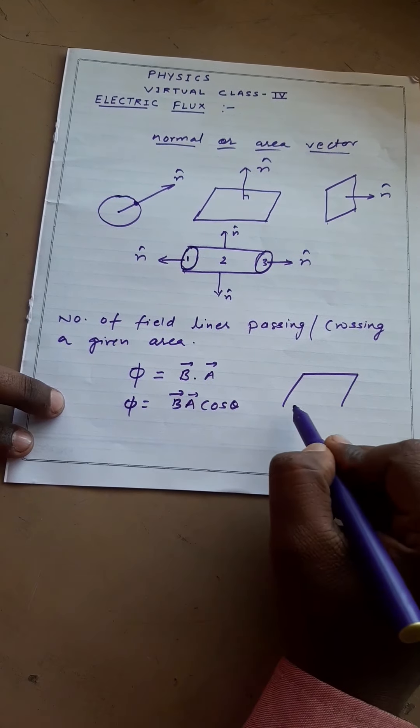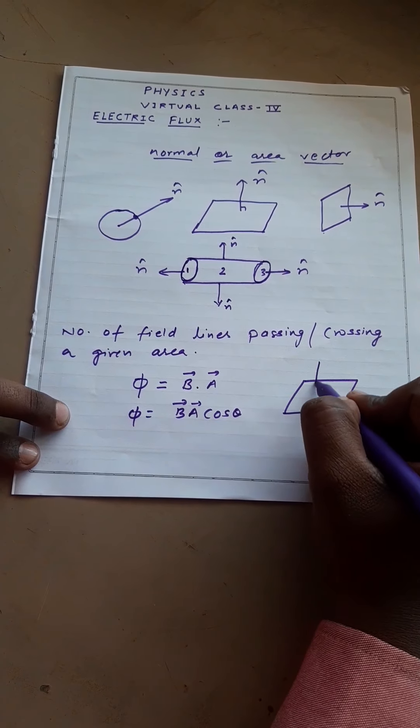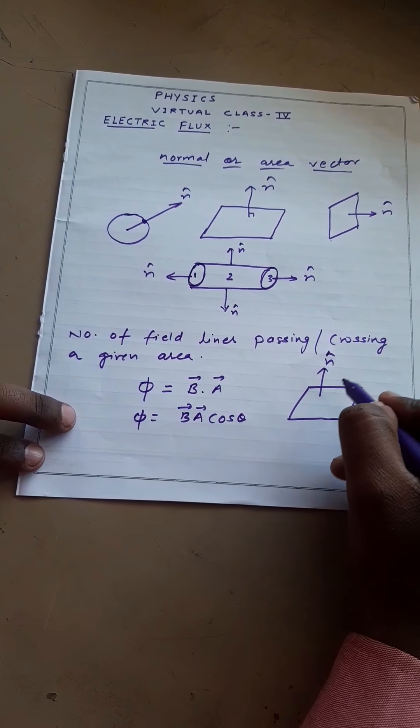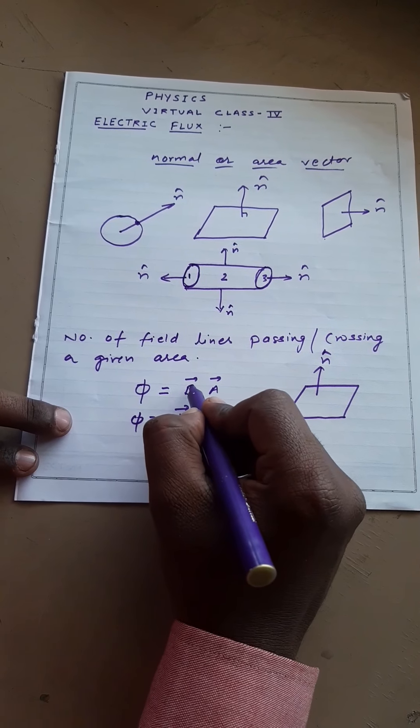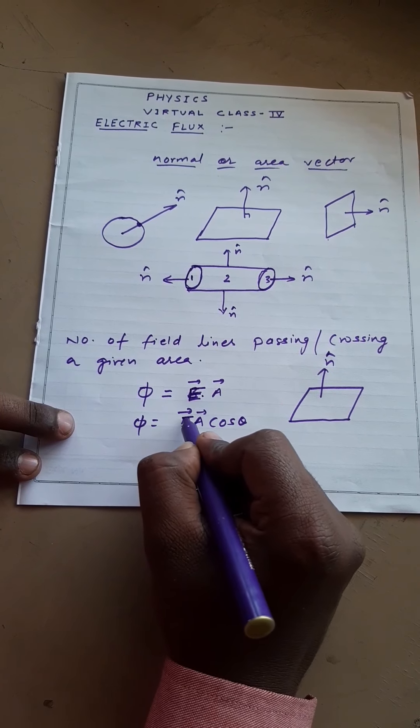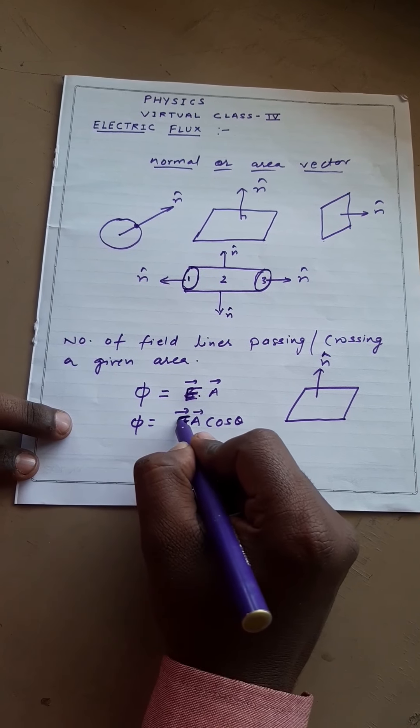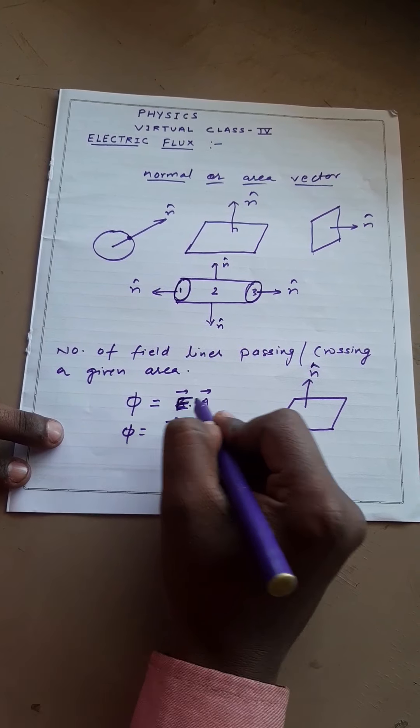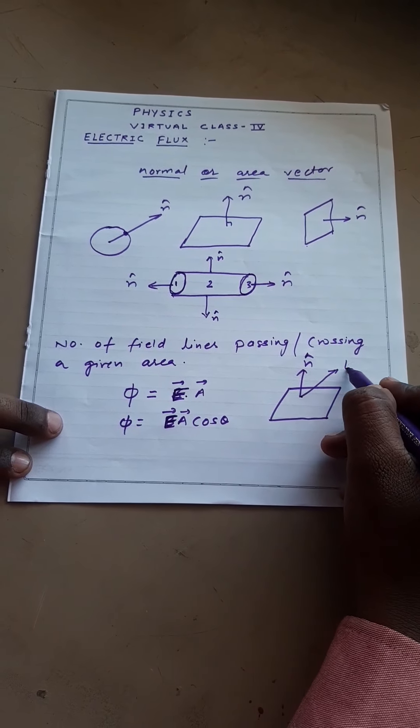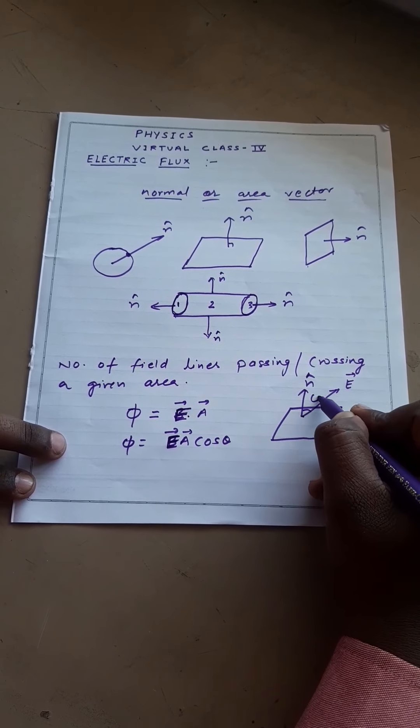Let us assume this is our normal vector or area vector. Sorry, not B, it's E. Number of field lines. And this is our electric field vector and this is angle θ.